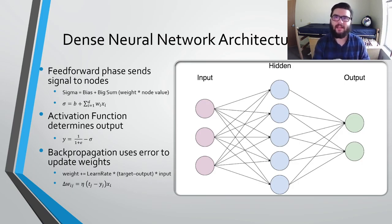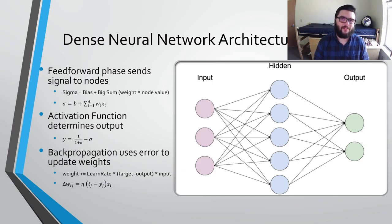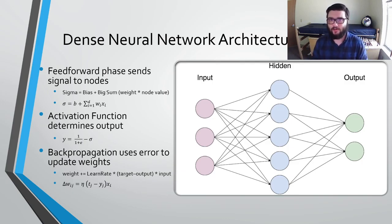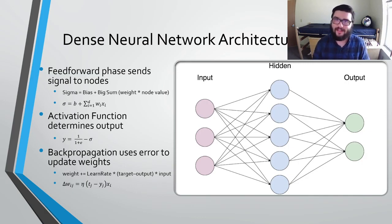Each connection between two nodes is given a weight value. These weight values are the main parameter in dense neural networks — if you have perfectly optimized weights, your network should be extremely accurate. To determine the input value for a node, you take all the output values of the nodes in the previous layer and multiply them by their weights. To get the output value of a node, you take the input value and pass it through an activation function. These output values feed forward through the network until you reach the output layer, where each node represents a prediction. We have two output nodes — one could represent COVID and one could represent normal — and whichever has the highest output value is the ultimate prediction.